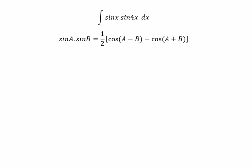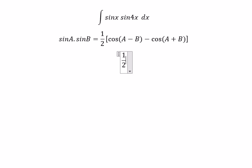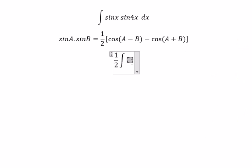So we get 1 over 2 with the integral of cos. We choose the 4x minus x, we get 3x. And we have 4x plus x, we get cos 5x.